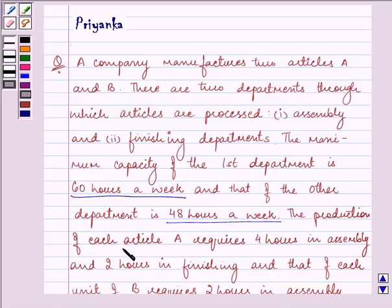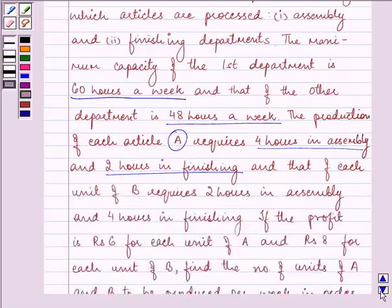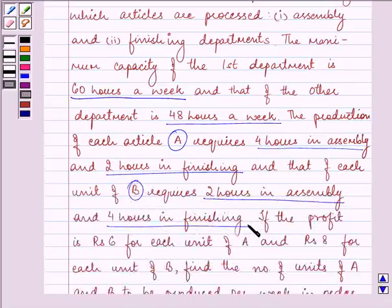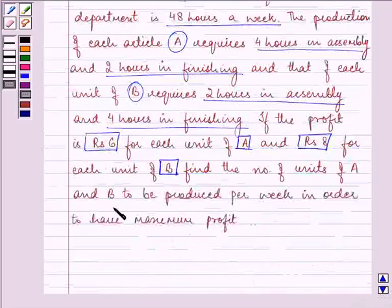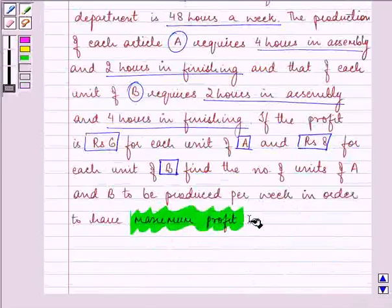The production of each article A requires 4 hours in assembly and 2 hours in finishing, and that of each unit of B requires 2 hours in assembly and 4 hours in finishing. If the profit is Rs 6 for each unit of A and Rs 8 for each unit of B, find the number of units of A and B to be produced per week in order to have maximum profits.